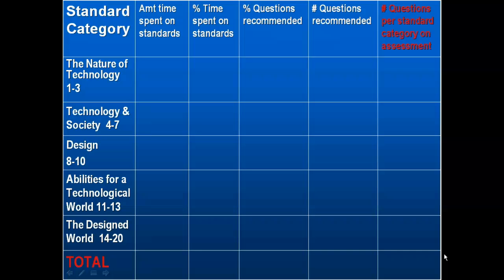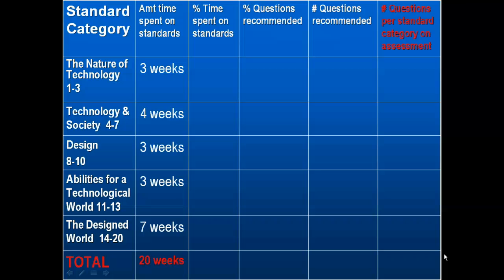On a real blueprint, whatever standards are taught, a separate row would be designated for each standard. Across the top are the blueprint components: the amount of time spent on the standard in the course, the percentage of time spent on the standard, the percentage of questions that need to be on the assessment for each standard, the number of questions that need to be on the assessment, and the exact number of questions that will be on the assessment. Here's an example of how much time is spent on each standard category out of a 20-week course — three weeks on standards one through three, four weeks for standards four through seven, for a total of 20 weeks.